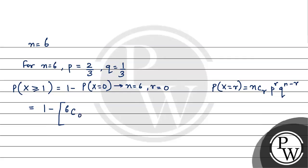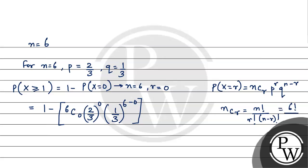Here N is 6 and r is 0. So this becomes 1 minus 6C0 multiplied by (2 by 3) to the power 0, multiplied by (1 by 3) to the power 6 minus 0, i.e., power 6. Now 6C0 equals 6 factorial upon 0 factorial times 6 factorial, which equals 1. And anything to the power 0 is 1. So we need to solve 1 by 3 whole to the power 6.